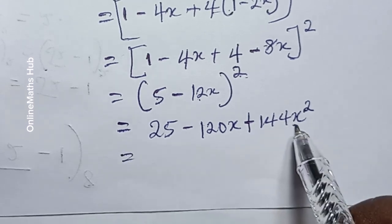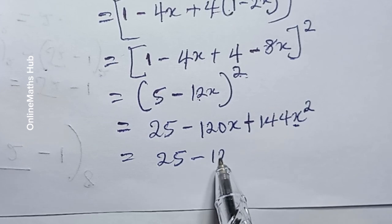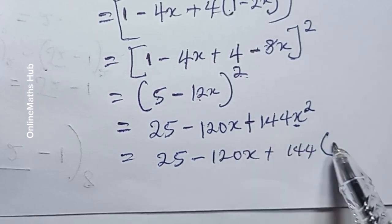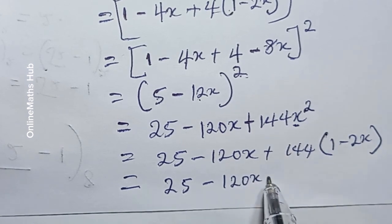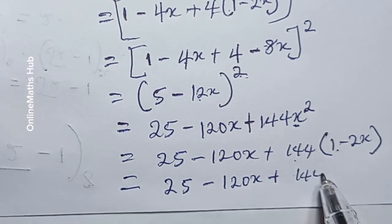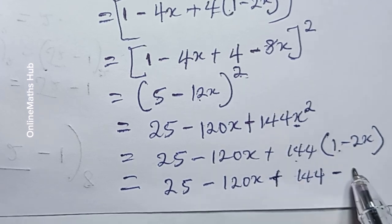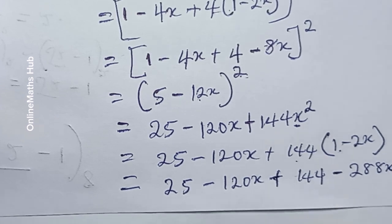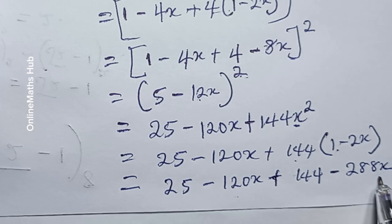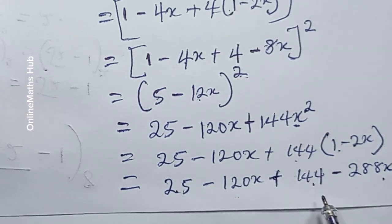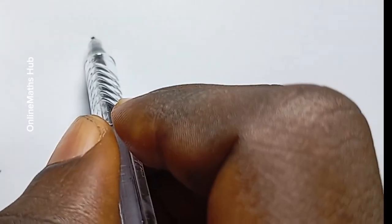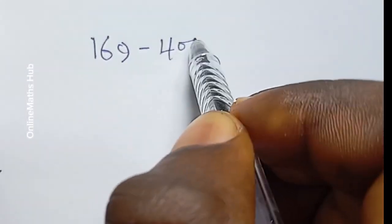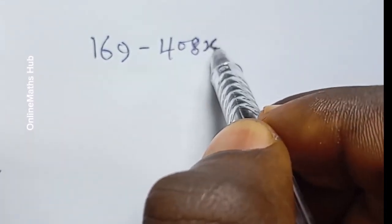I'll substitute x squared again: 25 minus 120x plus 144 times (1 minus 2x). Opening the bracket gives 144 minus 288x. Summing constants: 25 plus 144 is 169. Summing the x terms: minus 120x minus 288x is minus 408x. So the result is 169 minus 408x.